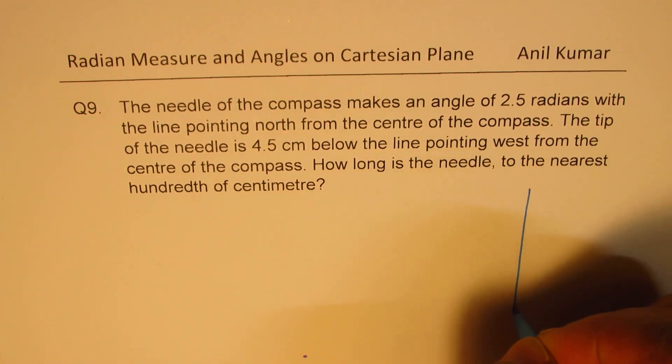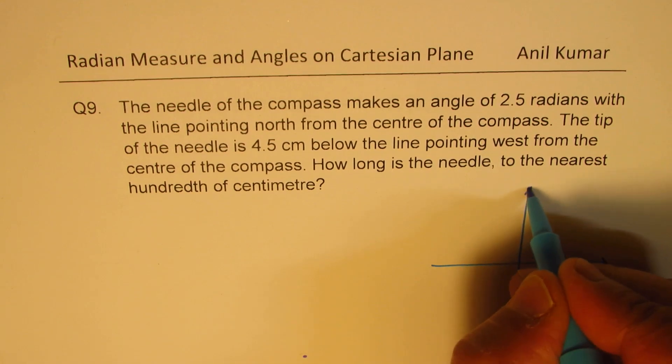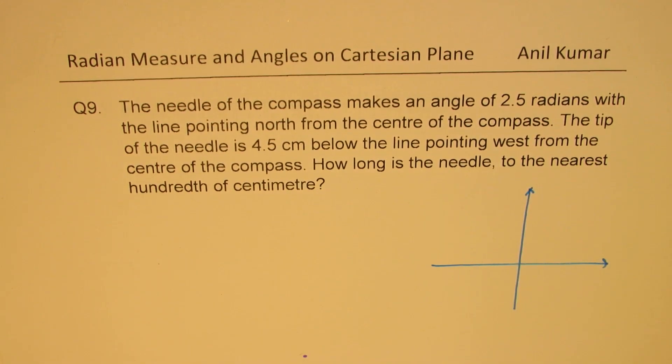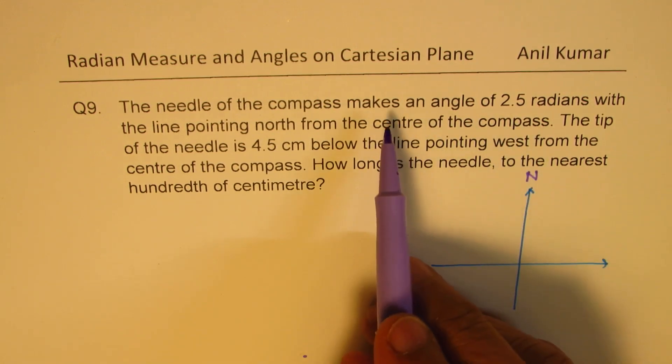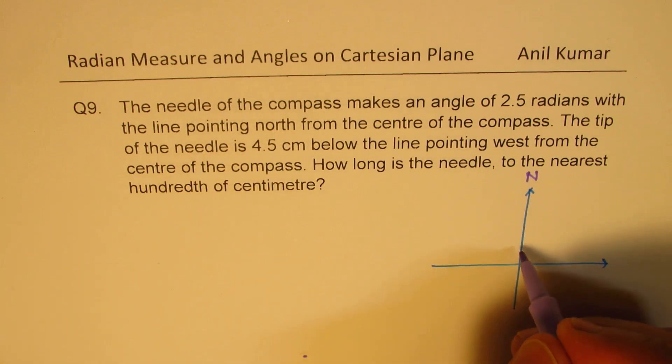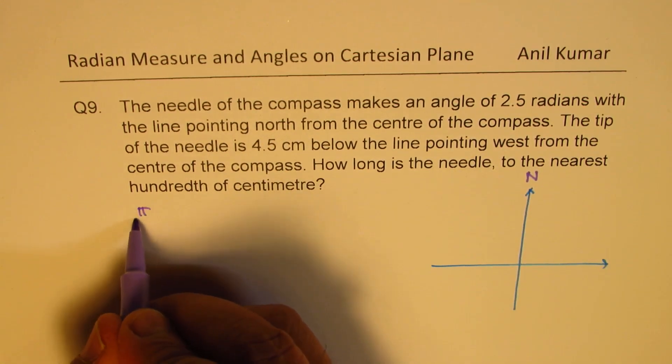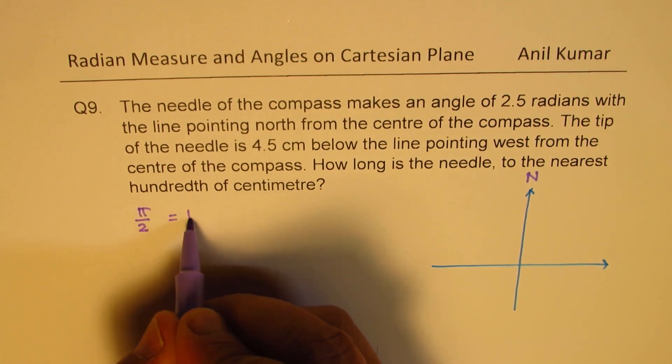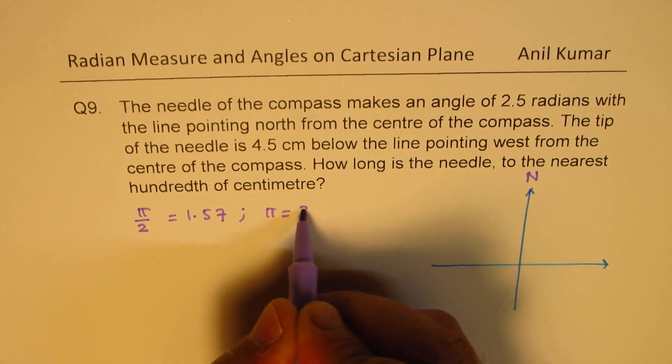So, let's sketch the scenario. Let us assume this is north for us. We are given that the needle makes 2.5 radians with the line pointing north. You should know that pi by 2 is 1.57. We know that pi is 3.14.